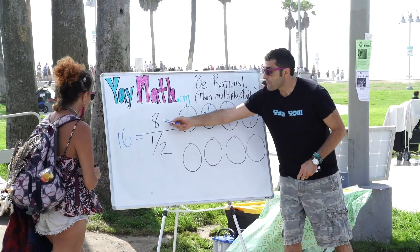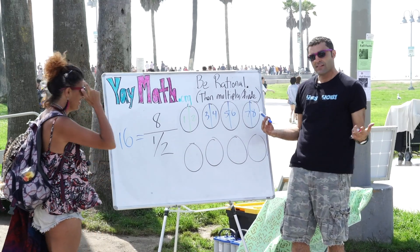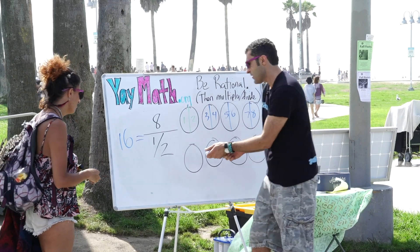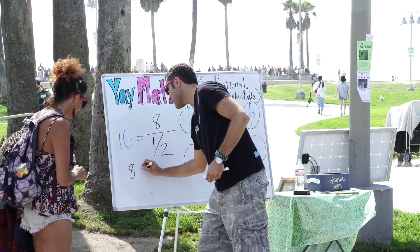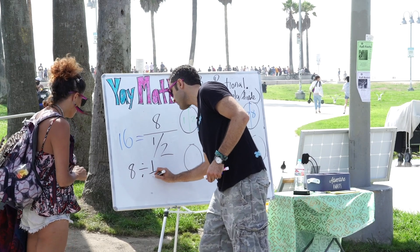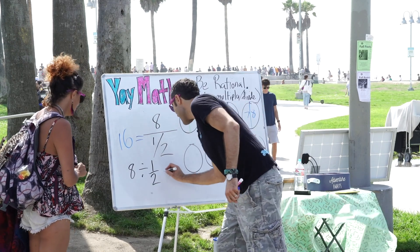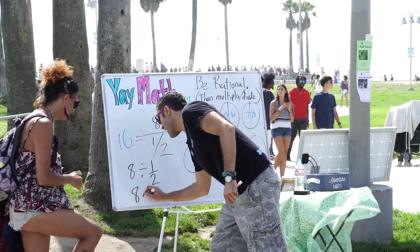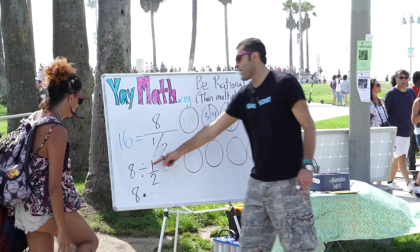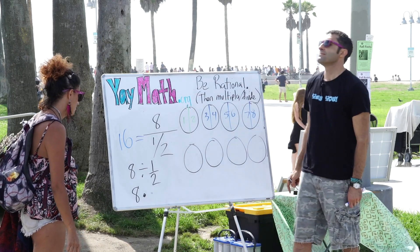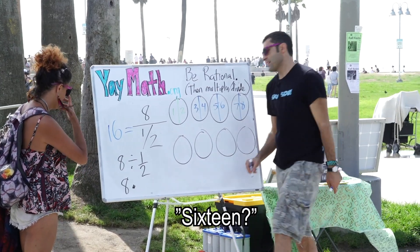Remember, we don't always need to draw all these pizzas. We could actually do it numerically. Watch: eight divided by one-half is the same — this is your moment — as eight times... divided by a fraction is the same as times what? The answer is 16.